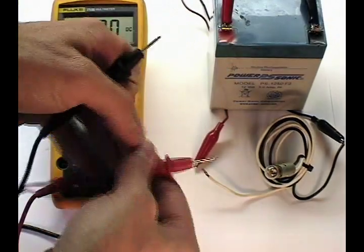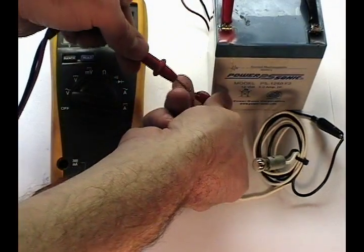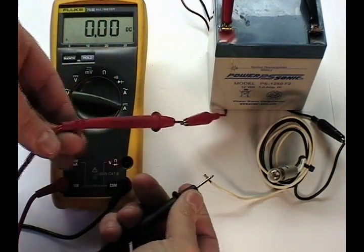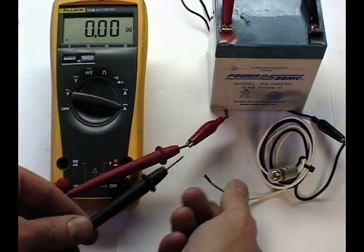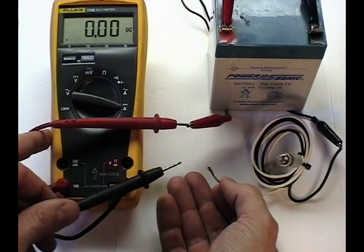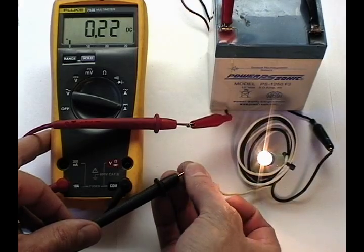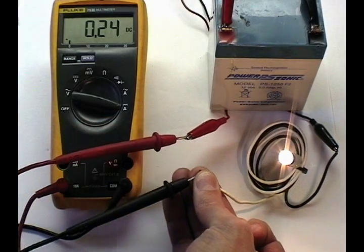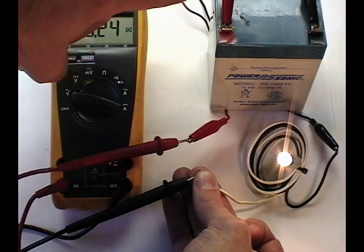We open the circuit and re-complete it, forcing the current to flow through the multimeter. As it does, we get a reading of the actual current in the circuit. Here we see 0.24 amps.